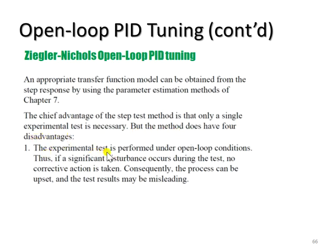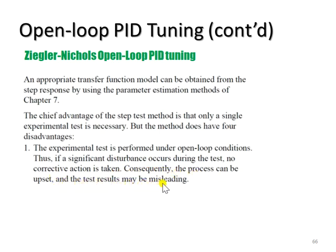The experiment test is performed under open loop condition. Therefore, if a significant disturbance occurs during the test, no corrective action can be taken because the controller is in offline mode. Consequently, the process can be upset and test results may be misleading.